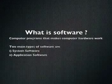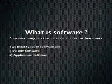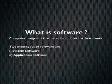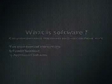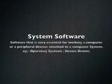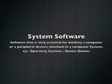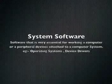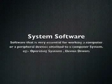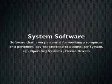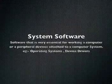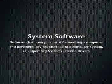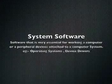How can we define software? Software refers to computer programs that make computer hardware work. There are two main types of software: system software and application software. System software is essential for operating a computer or peripheral devices attached to it — for example, operating systems and device drivers for printers and mice.